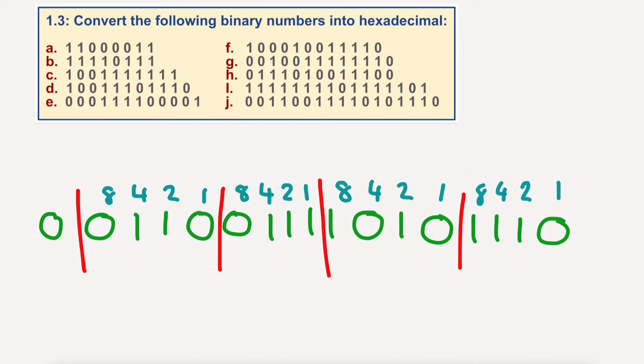So, let's add these up. So, 8 plus 4 plus 2 would equal 14. Make a little note of that 14 there. But 14 equals E in hexadecimal. 8 plus 2 is 10, so that must be A. 4 plus 2 plus 1 is 7. Same as denary. And 4 plus 2 is 6. And, of course, we've got a 0 there. Should we use it? We don't need it. 6, 7, A, E. Okay?